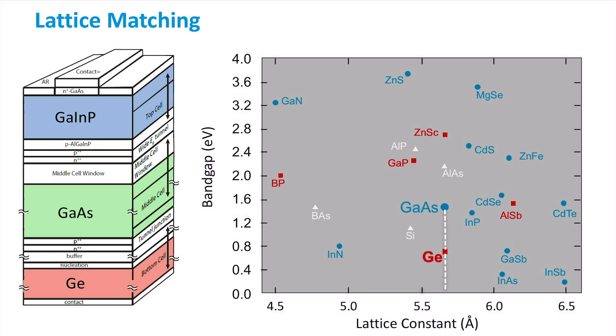For reasonable current density matching, the desired bandgap of the top cell should be around 1.8 eV. However, we see that no suitable alloys exist based on solely two elements.